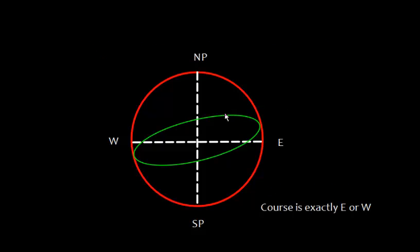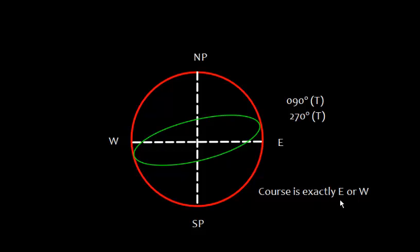If we examine carefully, if we are going from west to east, the course will be 090 degrees. Or if we are going from east to west, the course will be 270 degrees true. So we can say the course is exactly east or west at the vertex.